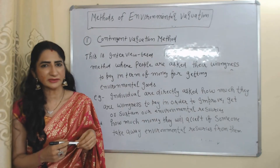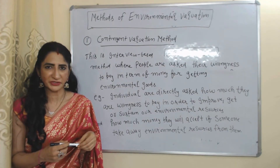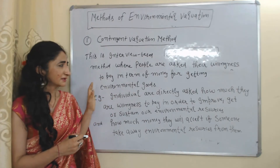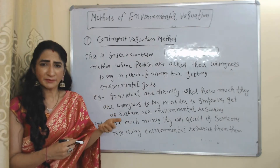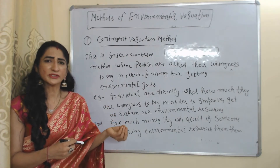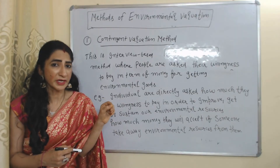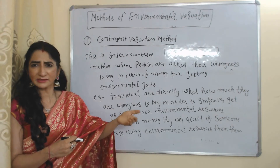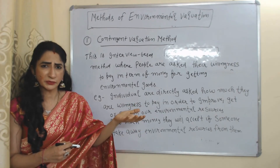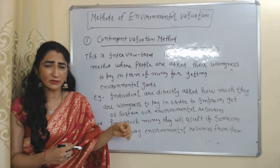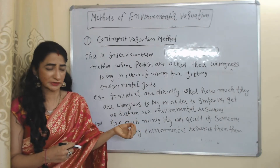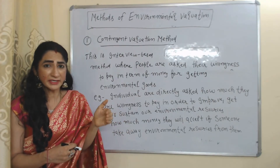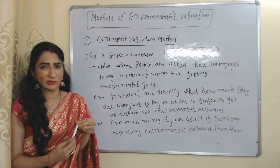Now we will see important methods of environmental valuation. The first important method is the Contingent Evaluation Method. This is an interview-based method where people are asked how much they are willing to pay in terms of money for getting environmental goods. For example, individuals are directly asked how much money they are willing to pay to sustain or improve environmental resources, or how much money they will accept in exchange if someone takes away environmental resources from them.